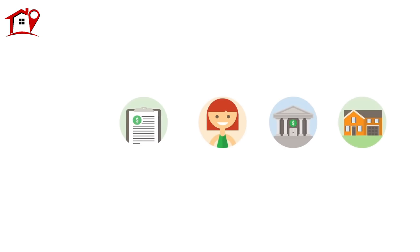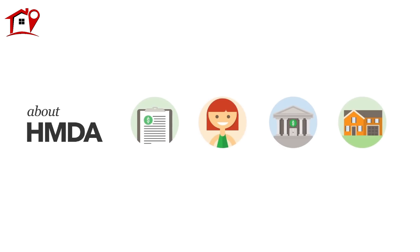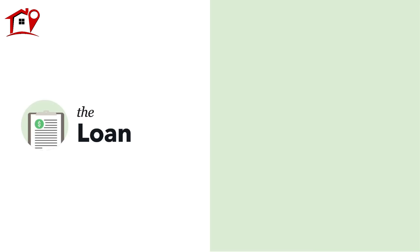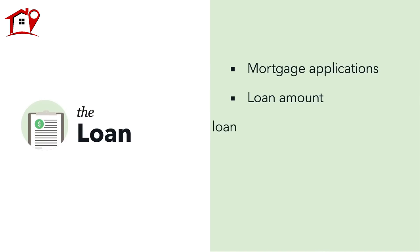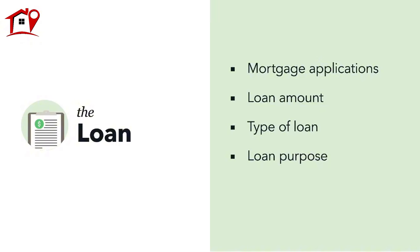Now let's look at the kind of information you can find in the public HMDA data. First, you can find information about the loan itself. The data include mortgage applications regardless of whether the application was approved or denied. You can also see the loan amount and the type of loan, including whether it's a VA or FHA loan. The data also show if the loan is for buying a home, refinancing an existing mortgage, or for home improvements. If the application was denied, in some cases you can see the reasons why.